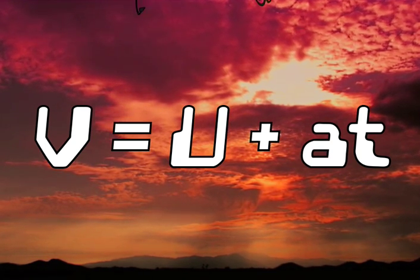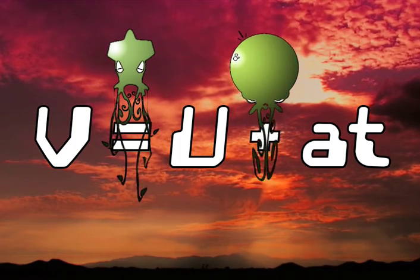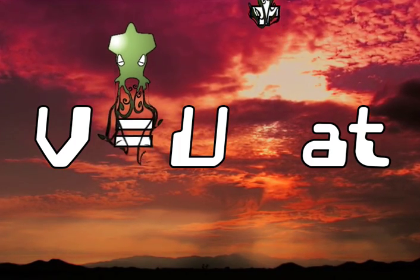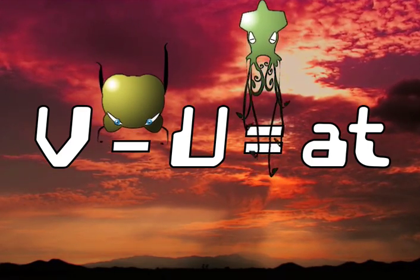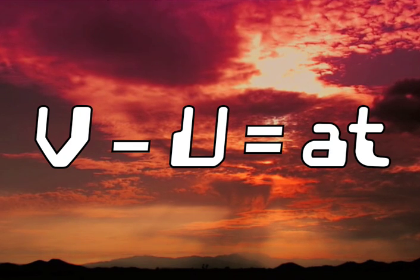We want to get t on its own. The first thing we do is to eliminate any pluses or minuses. If we take u over to the other side, we end up with v minus u equals a t.